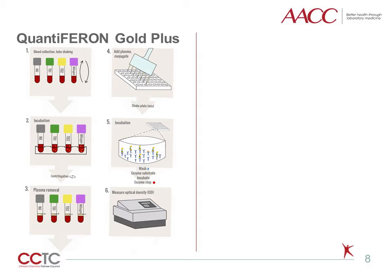The set of four tubes also includes one gray-topped negative control tube and a purple-topped positive control tube. Immediately after blood collection, all four tubes are shaken 10 times to mix the blood with the antigens. The blood incubates in these tubes to allow interferon gamma stimulation and release to occur. The tubes are then centrifuged, and an aliquot of plasma is taken from each tube and placed into a 96-well plate. An enzyme-linked immunosorbent assay, or ELISA, is then performed.